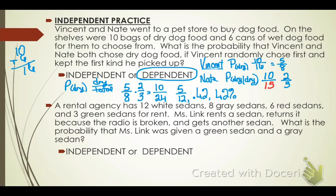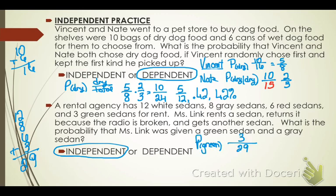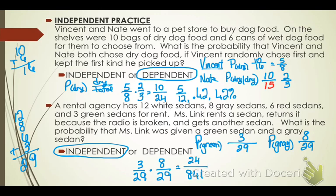A rental agency has 12 white sedans, 8 gray sedans, 6 red sedans, and 3 green sedans for rent. Miss Link rents a sedan, returns it because the radio is broken, and then gets another sedan. What is the probability that Miss Link was given a green sedan and then a gray sedan? There are 29 total sedans, and these are independent because she took the sedan back. The probability of a green sedan is 3 out of 29, and the probability of a gray sedan is 8 out of 29. Multiplying gives 24 out of 841, which reduces to 3 one-hundredths or 3 percent.